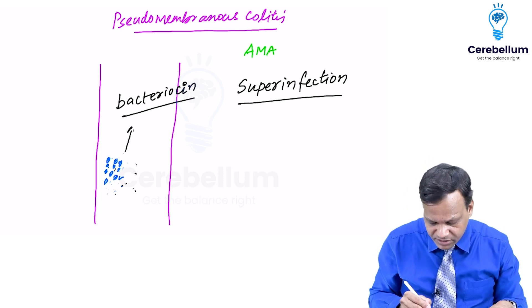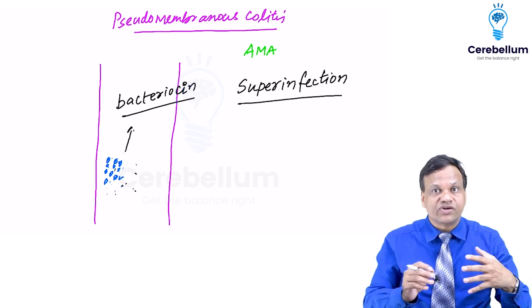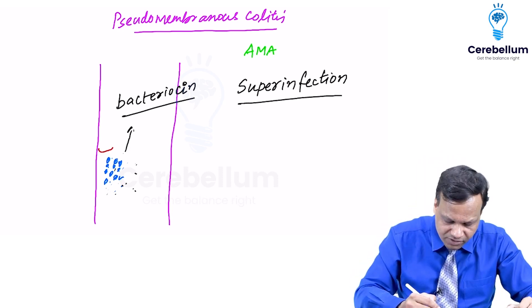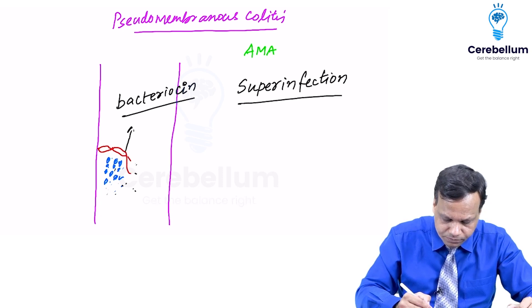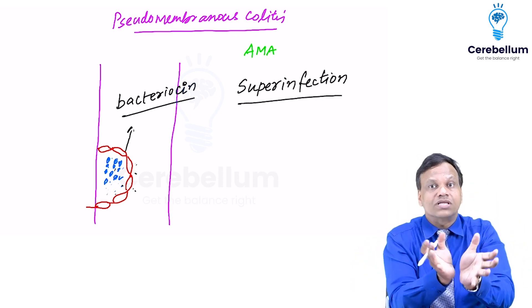Now whenever the body came to know that there is infection, WBCs will come running. WBC have started coming running. So WBCs they will cover them all around. They form a membrane around them.